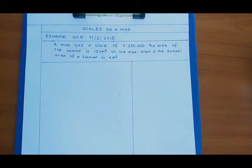This is a very common question in UCE and I've taken one from 2015, question number 11 of paper 2. The question states a map has a scale of 1 to 250,000. The area of the swamp is 12 centimeters squared on the map. What is the actual area of the swamp in kilometers squared?